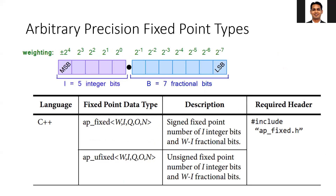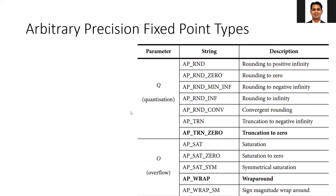Similar to the integer data type, you can have the fixed point data type, where you have the integer part and the fractional part. Using ap_fixed.h, you can use this data type, specifying the w parameter for total number of bits, how many bits are reserved for the integer, and the remaining bits for the fraction. You can also mention the quantization mode, overflow mode, and number of saturation bits. All details are in the UG902 document. Now we are going to go back to our matrix multiplication code and discuss how to incorporate arbitrary precision data types.